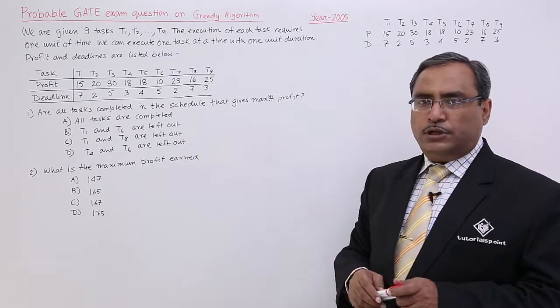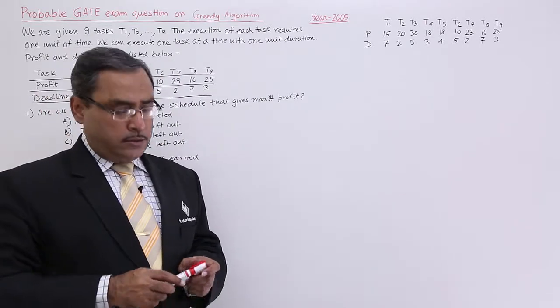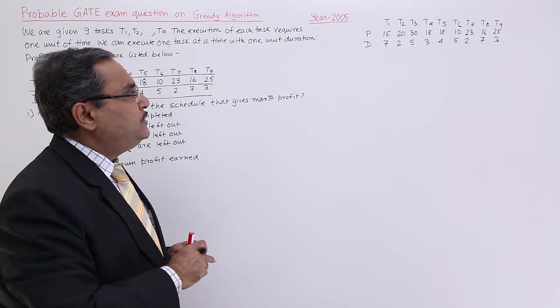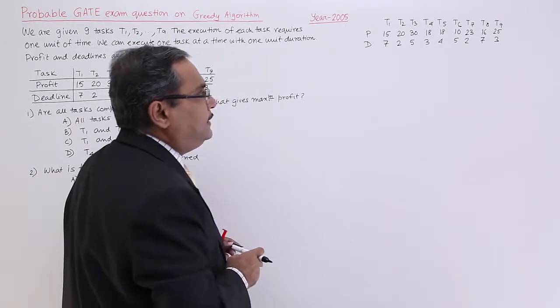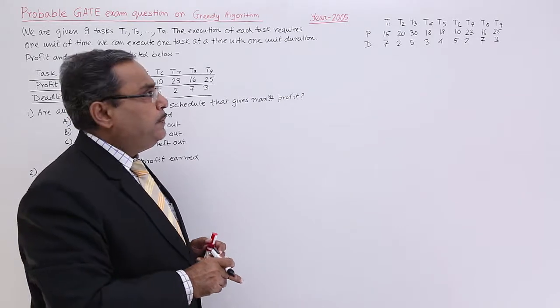That means I shall have to go for the scheduling for these 9 tasks. At first what I shall have to do, I shall have to sequence them in the descending order according to the profit values. Let me do it.